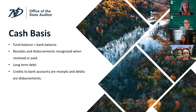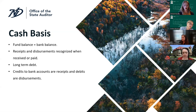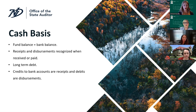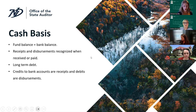On the form, there is a long-term debt tab where you can record the long-term debt of your district. You can enter the type — whether it's a loan or a bond — the institution, the purpose of the debt, the original amount, and the balance amount. The credits to the bank accounts are your receipts and the debits are disbursements for a cash basis report.